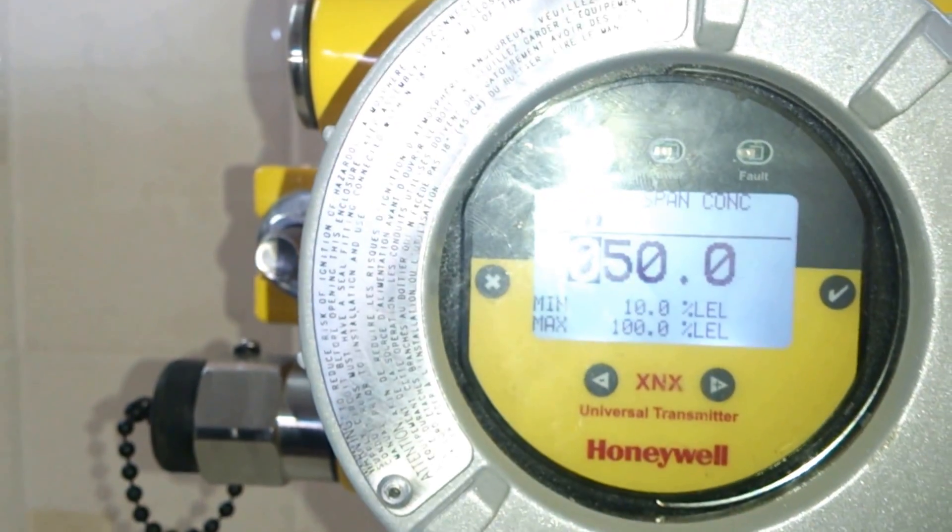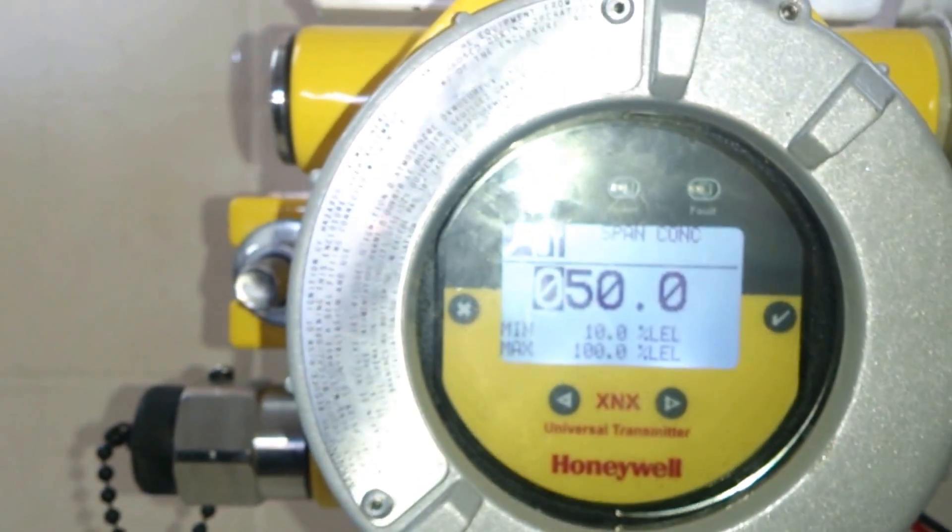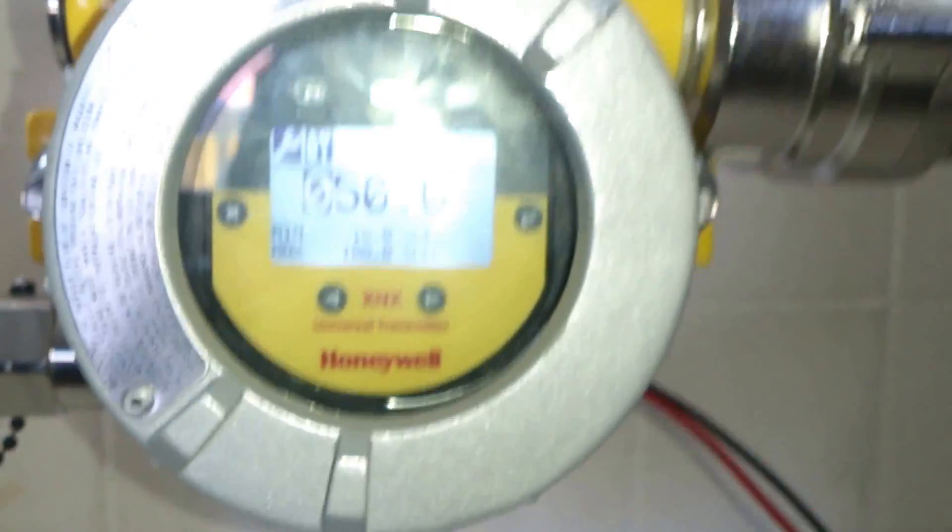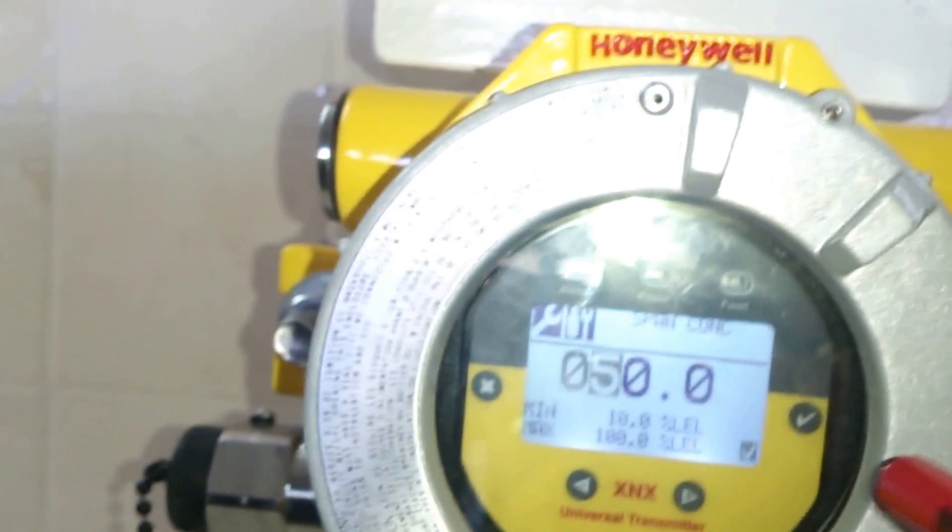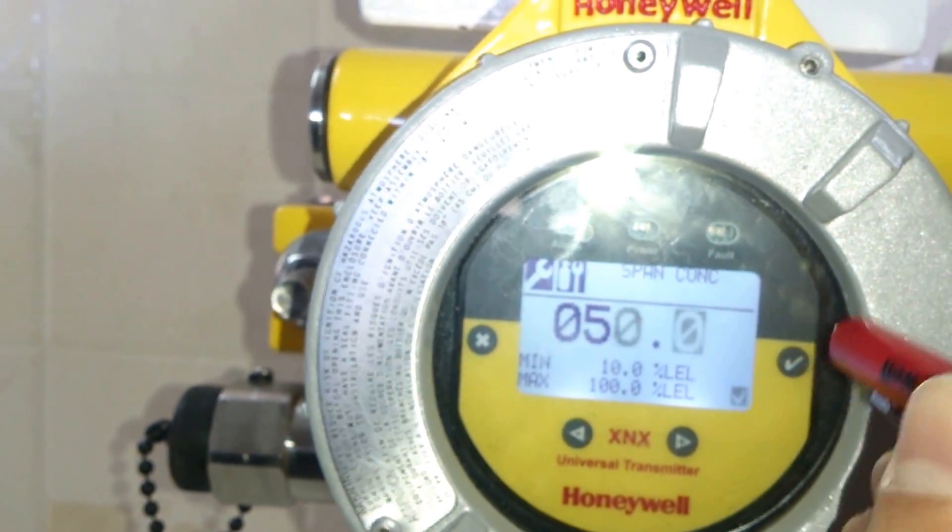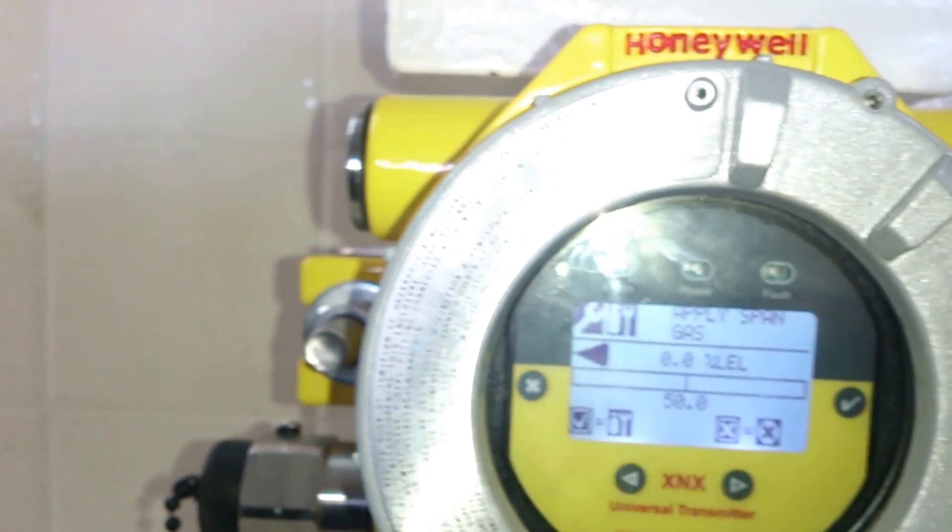Next is span calibration. Span calibration has to be set to 50%, as the cylinder rating is 50%. Once the value is set, that is 50%, now we apply gas using the calibration cup and gradually increasing the regulator knob. Once the gas is applied, we see increase here in the LEL level.